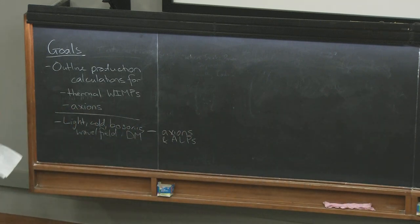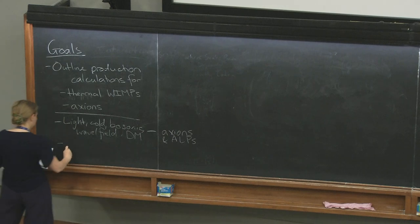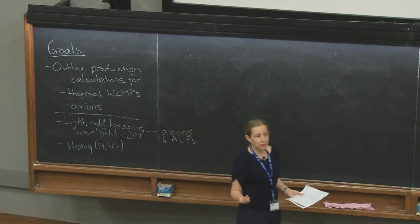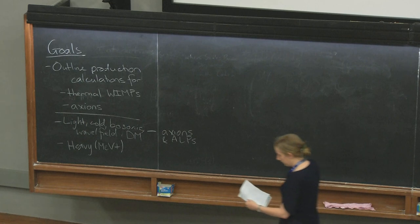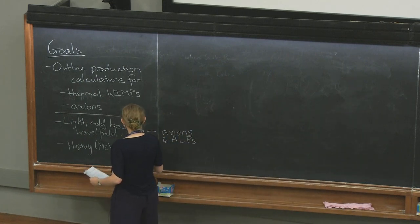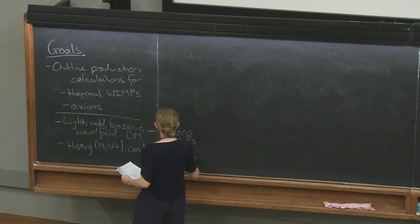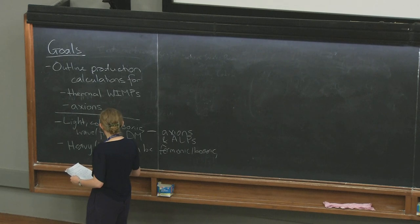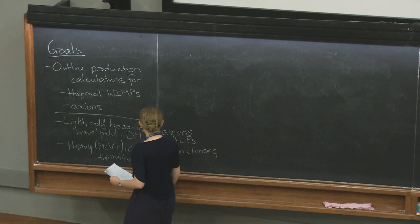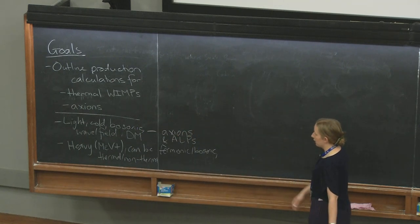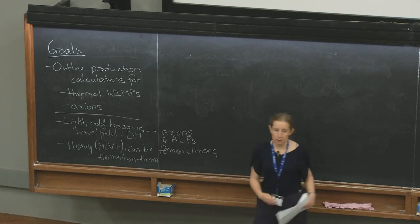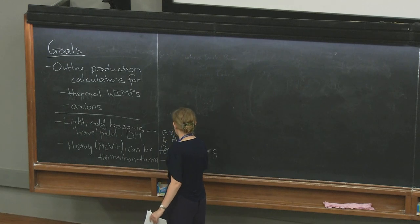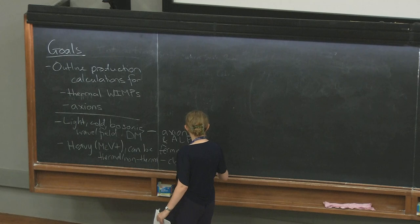On the other hand, once you go much above the MeV scale, your options open up a lot. For this kind of heavy MeV-plus dark matter — comparable to the particle masses we know in the standard model — the dark matter could be fermionic or bosonic, thermal or non-thermal. One particularly predictive class of scenarios is where the interactions of the dark matter with the standard model fix its abundance in the present day. That's the classic thermal weakly interacting massive particle scenario — WIMPs.